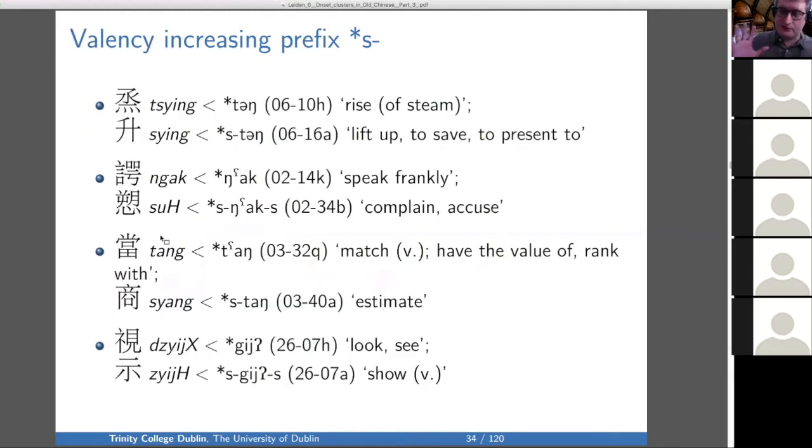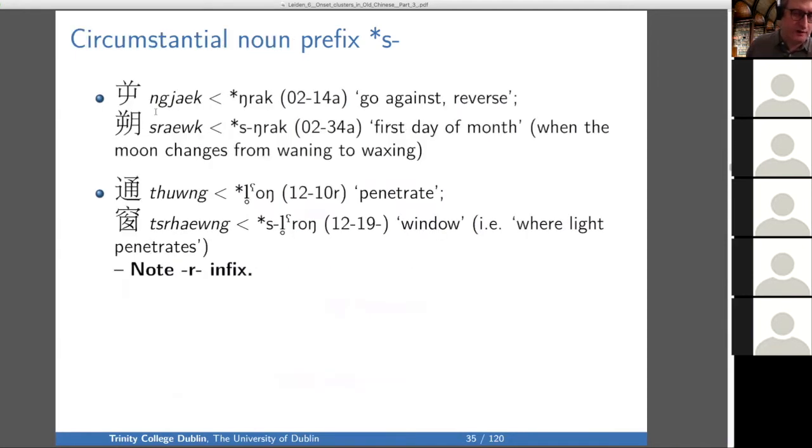So the valence increasing S: we have things like tang, rise of steam, to rise intransitively, and stang, to lift up, to save, to present to. We have nak, to speak frankly, and snuk, to complain or accuse. It's not so obvious that's valence—it is valence increasing, isn't it? It's not really causative, but it's valence increasing.